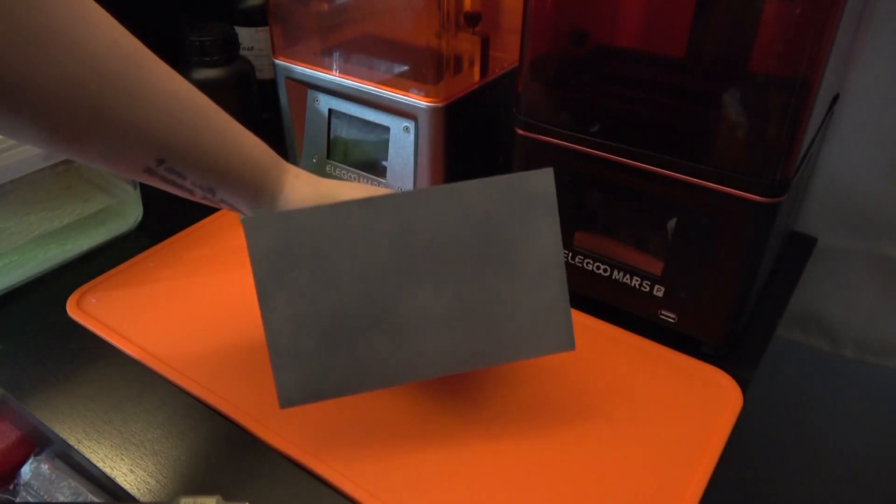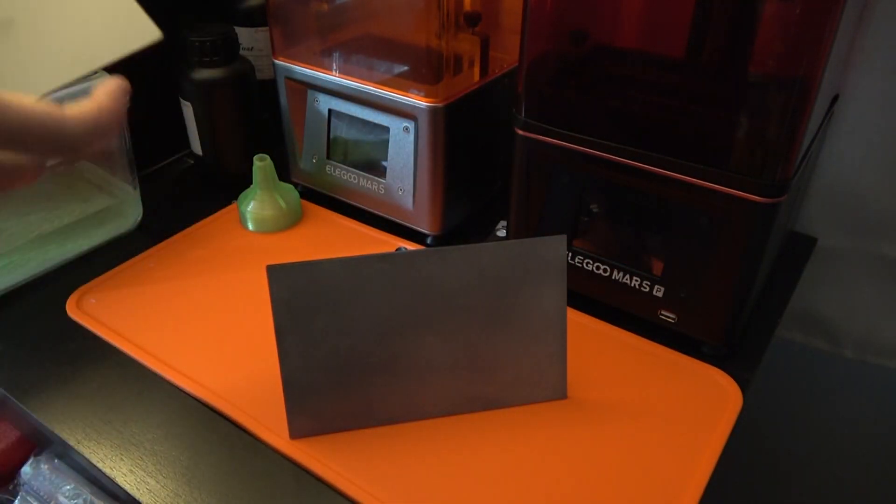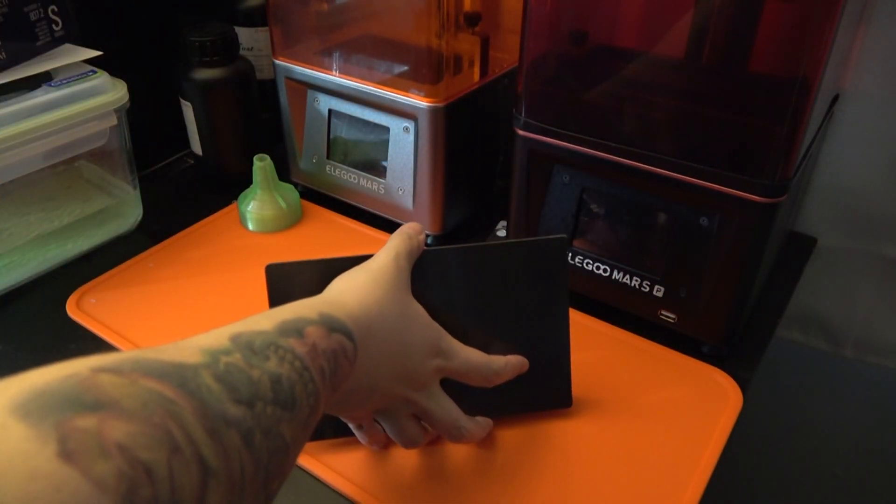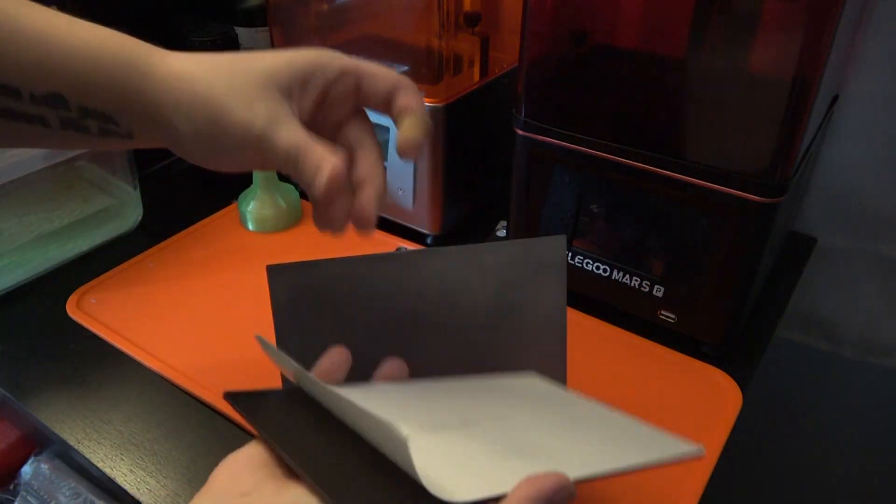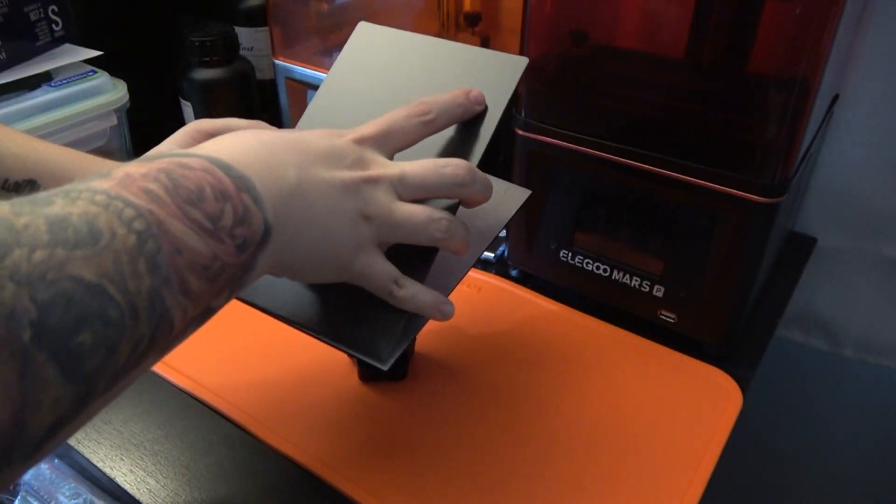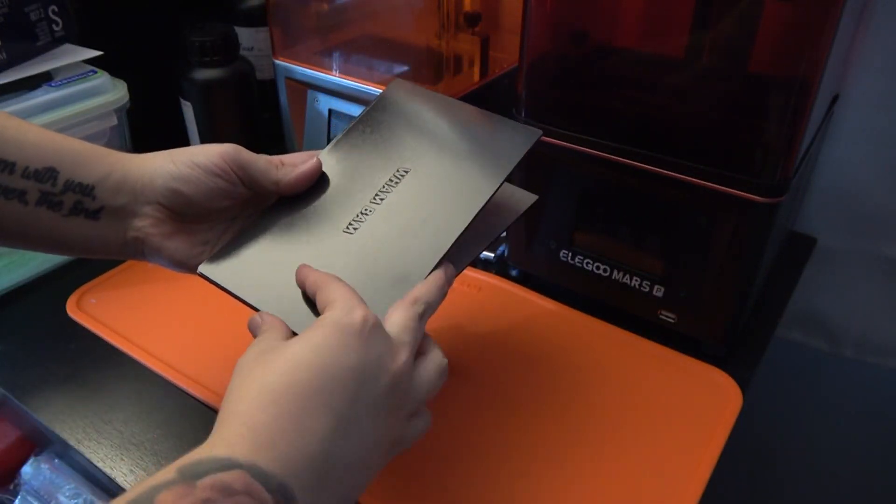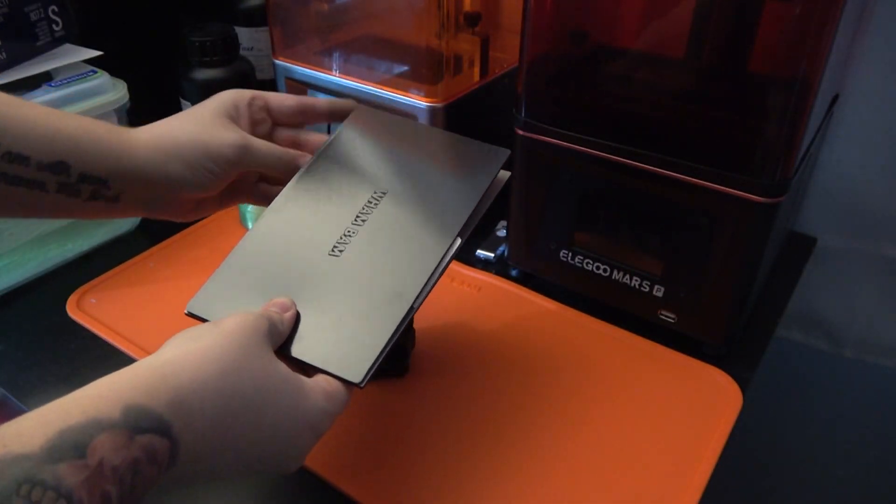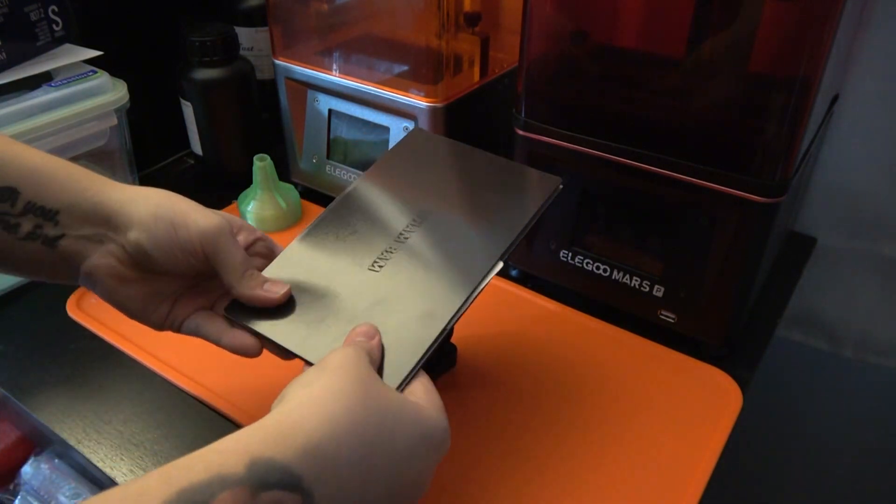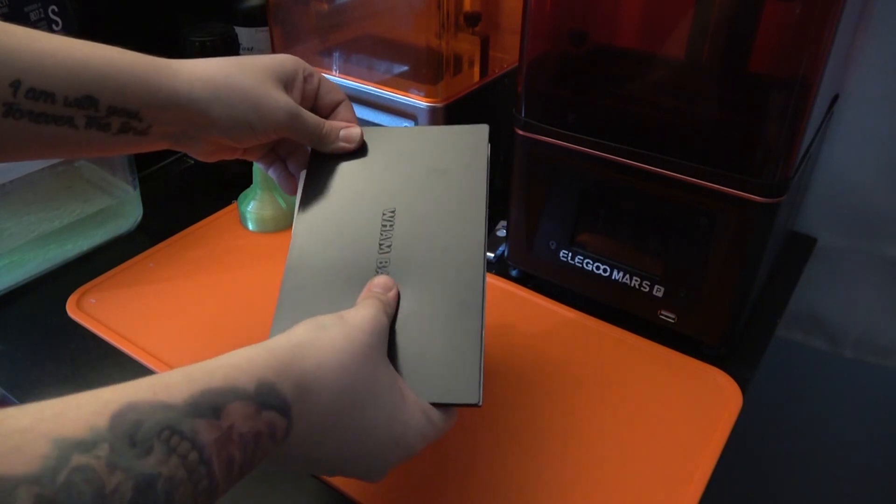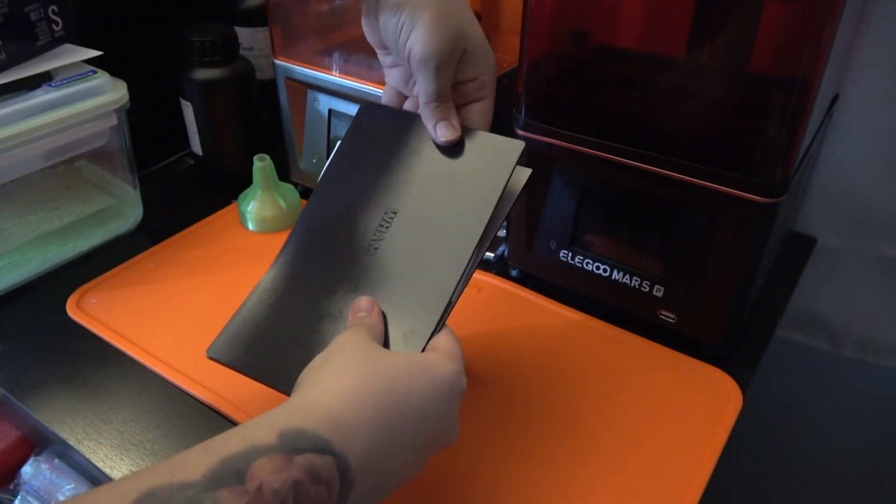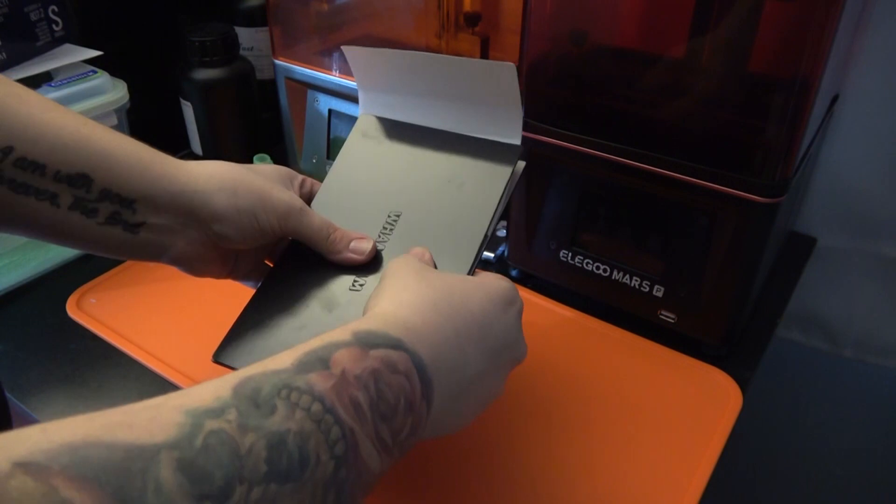Let's hop over to the next size up, we've got one for the Elegoo Saturn, same thing. Peel back the edge, line it up in the corners, and just slowly start to apply it as you're peeling back that paper to reveal the sticky side of the magnetic base.